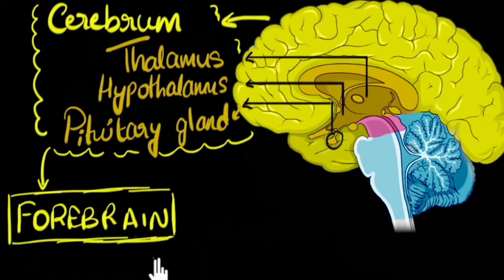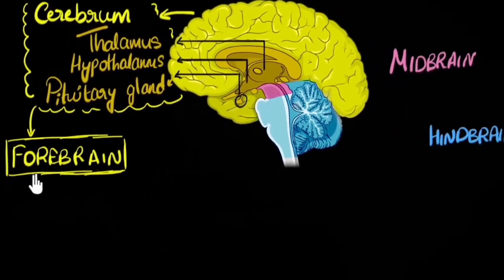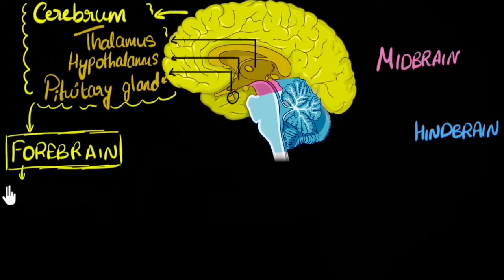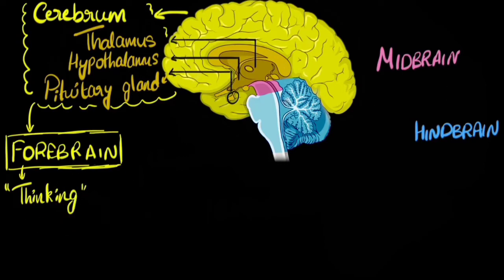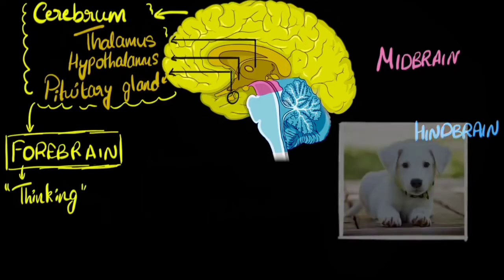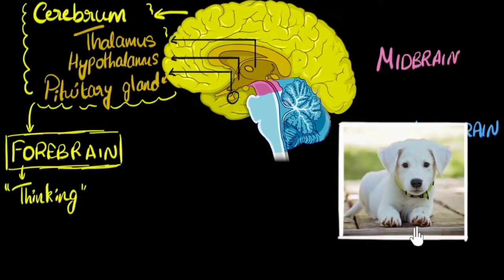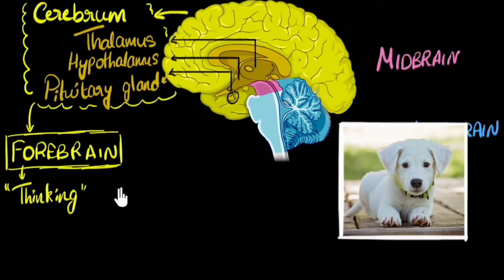So what are the functions of the forebrain? One of the things, as we already said, is voluntary functions — but let's dig a little deeper. One function is thinking, and when I say thinking I'm including a lot of things: thinking, your learning ability, your speech, language — all of that comes from your forebrain. Also, the reason you are able to see this picture is because of your forebrain. Your eyes send the signal to the brain, and it's your forebrain that does the processing. Similarly, you can hear because of your forebrain. All five senses — you can sense them because of your forebrain. So one important function of your forebrain is sensing.